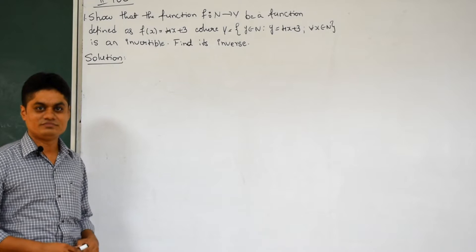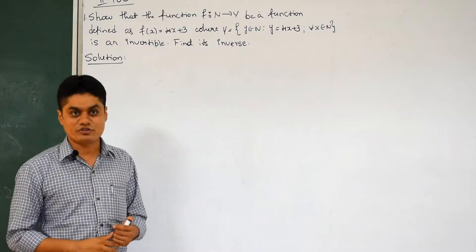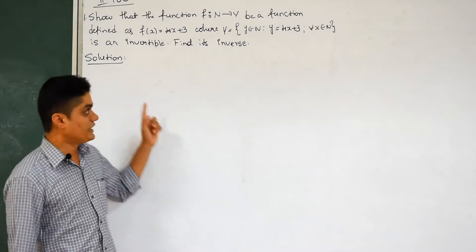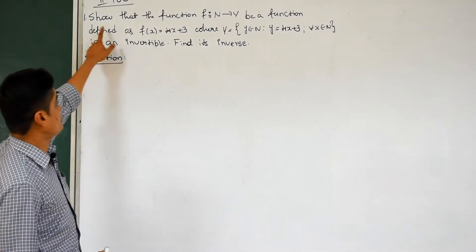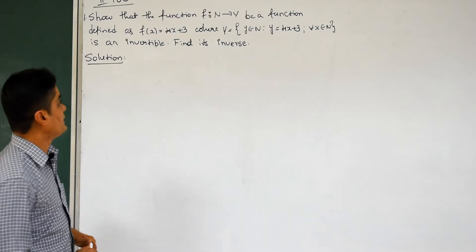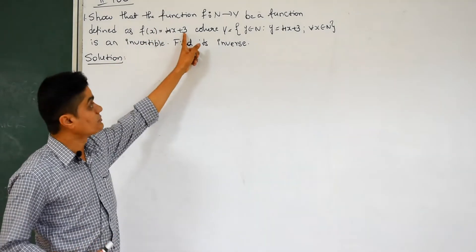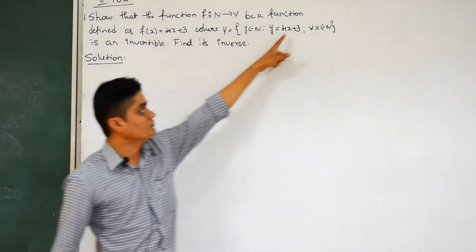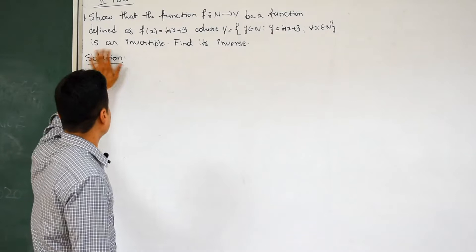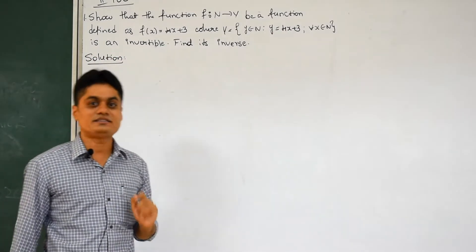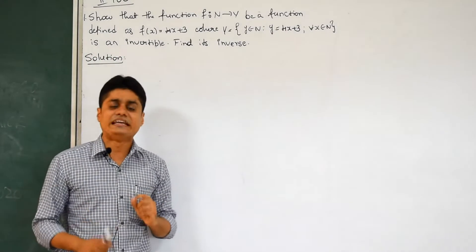Hello students, I hope everyone is fine. Today I am going to discuss some very important five-mark questions. The first question is: the function f from N to Y defined by f(x) = 4x + 3, where Y is the set of all elements y such that y = 4x + 3, is an invertible function — find its inverse.